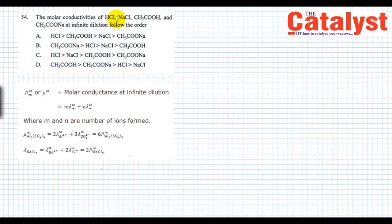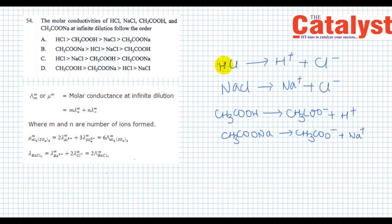In our question, molecules under consideration are HCl, NaCl, acetic acid, and sodium acetate. Let us see how these molecules are dissociated in aqueous solution. HCl gets dissociated into H⁺ + Cl⁻ ion. Sodium chloride will get dissociated into Na⁺ and Cl⁻ ion. Acetic acid into acetate ion + H⁺, and sodium acetate will dissociate into acetate ion + sodium⁺.